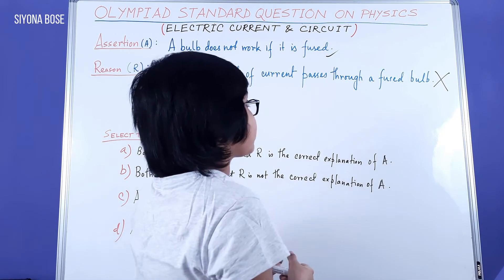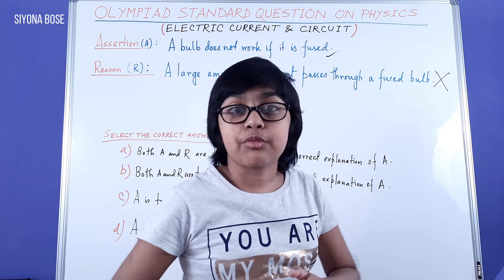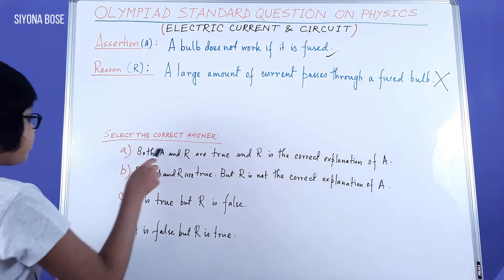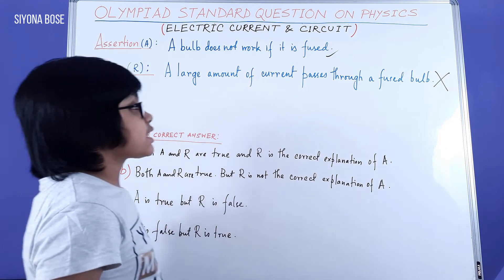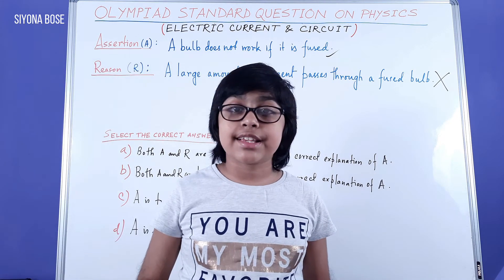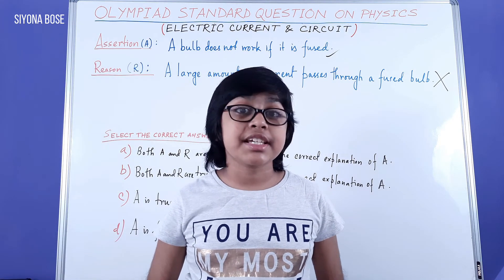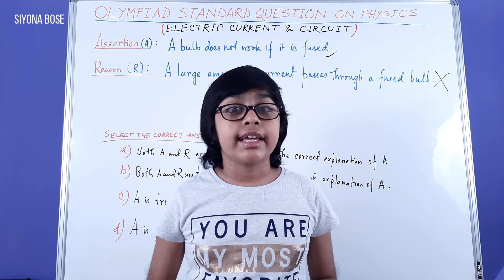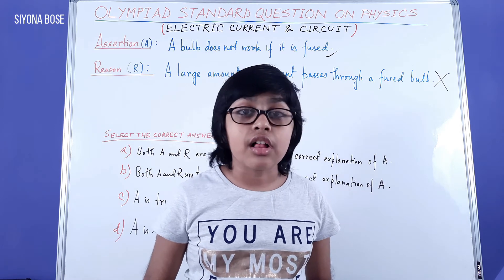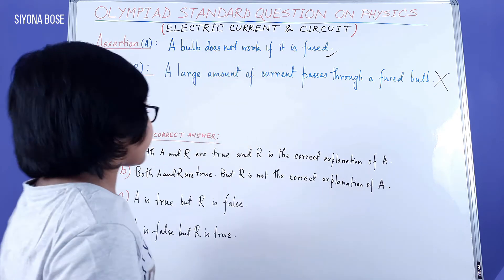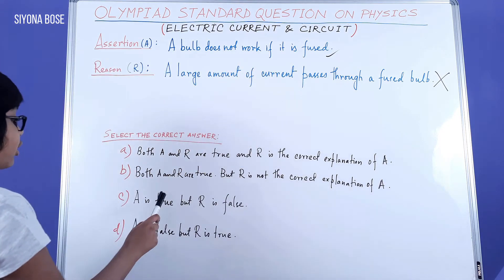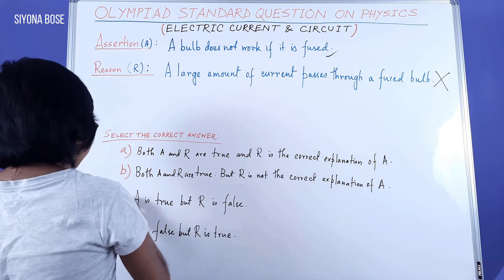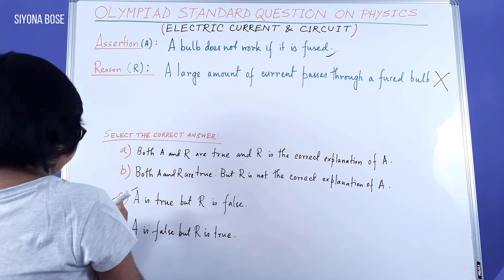Now that we have proven that one thing is wrong, we can immediately eliminate A and B. Since after analysis it was found that assertion is correct and the reason is false, which means A is true but R is false, and this is the correct option.